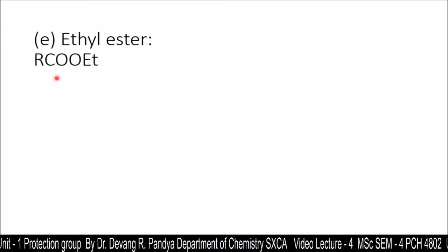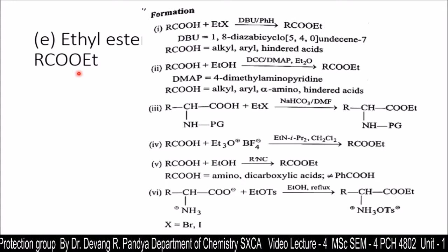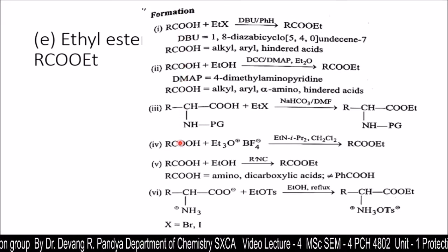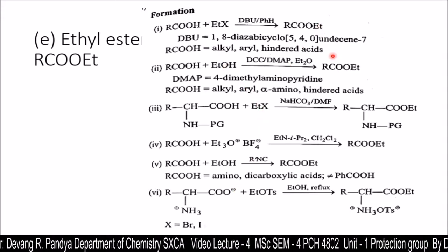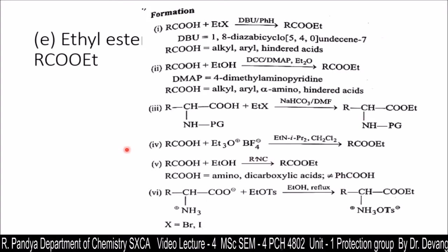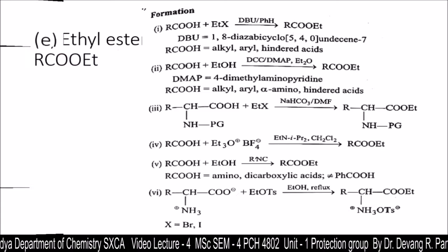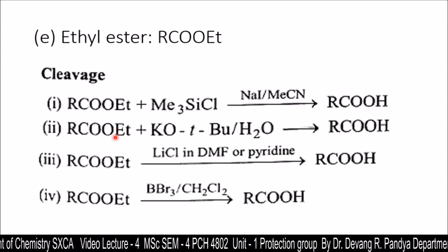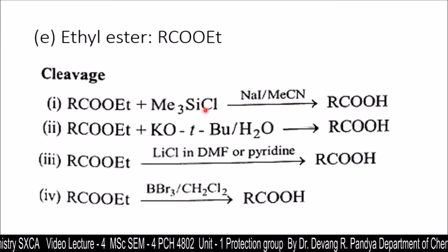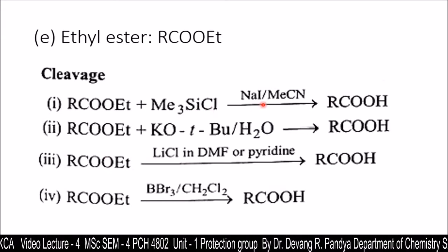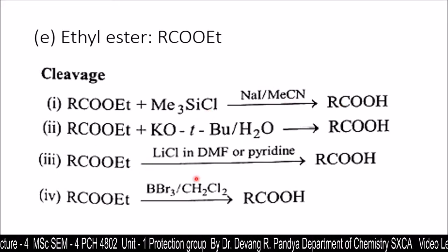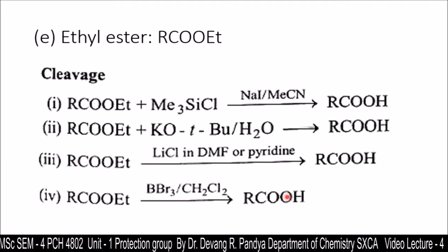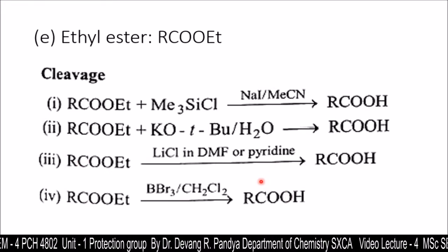Now, ethyl ester: the carboxylic group is converted into an ethyl ester for protection by treating with different reagents. This is the protection of the carboxylic group using an ethyl ester. For deprotection, the ethyl ester treated with trimethylsilyl chloride in the presence of sodium iodide and acetonitrile gives back the carboxylic acid. Similarly, other reagents treated with the ethyl ester also give back the carboxylic group — this is the deprotection.